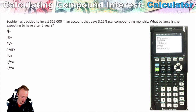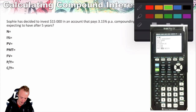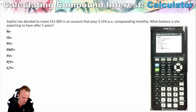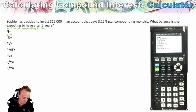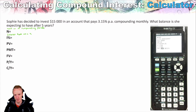The N here represents the total number of compounding periods. The I% is the interest rate, and this interest rate is used as a percentage. So when you're using the interest rate in a formula, you would convert it to a decimal, whereas in the calculator itself, you'll leave it as a percentage.